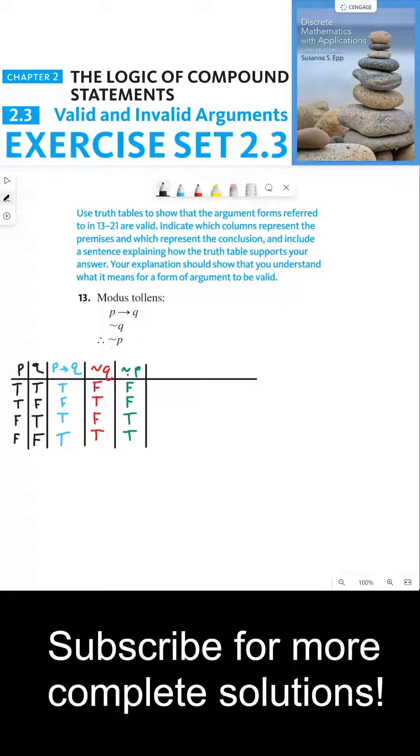Okay, so now let's interpret this truth table. So this argument form is valid only when, whenever the assumptions are true, the conclusion has to also be true. We don't have to consider situations where any of our assumptions are false. We only have to consider the situations in which our assumptions are true.